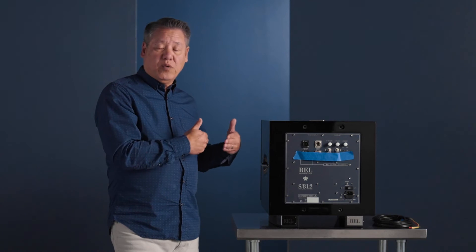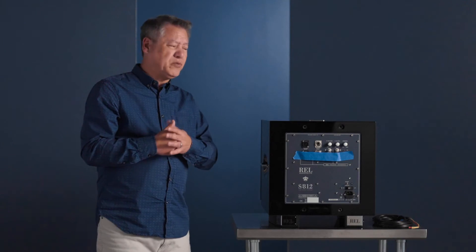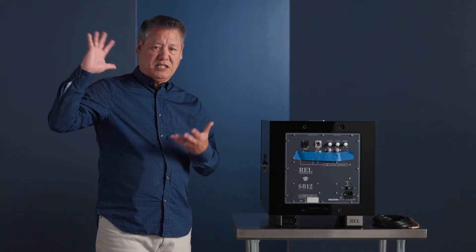And then for 0.1, that's a pure theater function. LFE stands for low-frequency effects. They're really the biggest, most bombastic special effects in a movie. There are two ways, traditionally, of bringing them in. This would come in from your receiver or your AV processor.